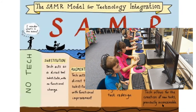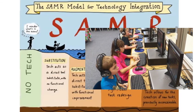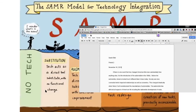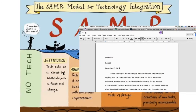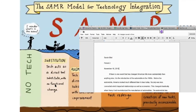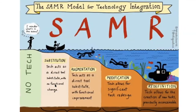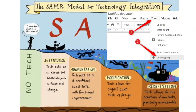For example: we used to have kids type in a computer lab on Word, save it, print it. Now we can use Google Docs. If we just switch from Microsoft Word to Google Docs, all we've done is substitute — a direct substitute with really no functional change. But we can start to access functional improvement, such as turning on voice-to-speech recognition. For a student who struggles with typing, he or she could just dictate their thoughts out loud, then go back and proofread and edit. That's an added functional improvement we didn't have before.